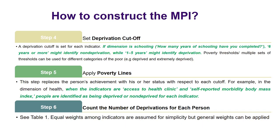What we need to do now is set the deprivation cutoff. For example, if a dimension is schooling — how many years of schooling have you completed — suppose six years or more identifies non-deprivation. If you've attended school for six or more years you are not deprived, but if only between one and five years, you are identified as deprived. It depends on the country and how you define the variable. You can also have indicators like access to a health clinic or self-reported morbidity, body mass index, and identify people as deprived or non-deprived for each indicator.